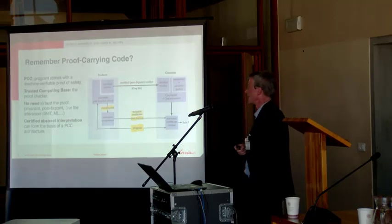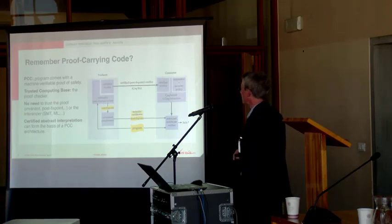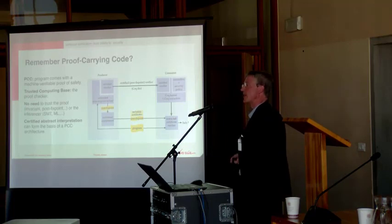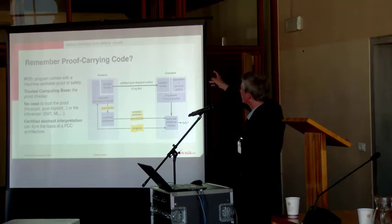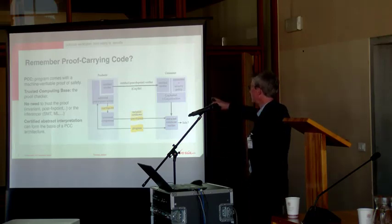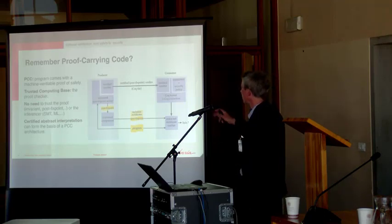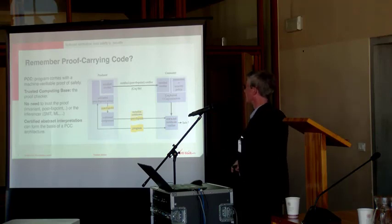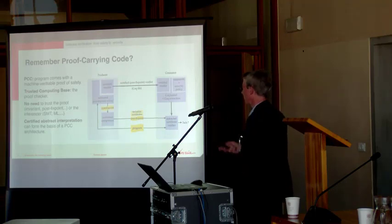Abstract interpretation is excellent for doing proof-carrying code, because abstract interpretation comes with a verifier of the proof in the case of a post-fixpoint — it just has to run through and check that this was indeed a post-fixpoint. You can build a whole proof-carrying architecture around certified abstract interpretation, where you certify the verifier and send that to the consumer so the consumer can convince himself it is semantically correct. The producer can then use all sorts of tricks to find a post-fixpoint — SMT solvers, machine learning, or just guess the fixpoint — and it still has to be verified at the consumer end.